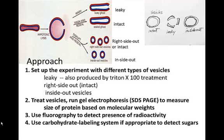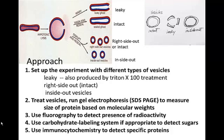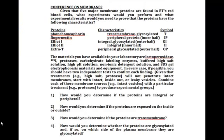Then you use fluorography to detect the presence of radioactivity. You also use carbohydrate labeling system, if appropriate, to detect sugars. And you can use immunocytochemistry to detect specific proteins in the gel if they happen to be present.